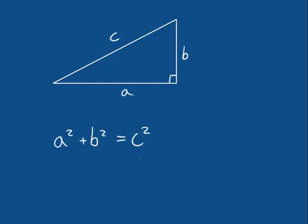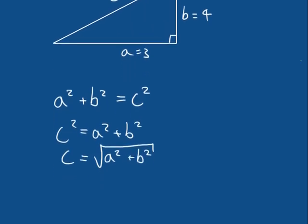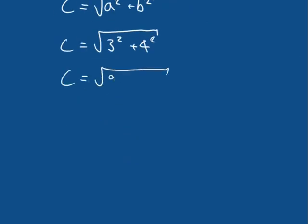So let's take a look at how we can apply this theory to calculate the length of an unknown edge in a right-angled triangle. Let's suppose that A equals 3 and B equals 4. How do we calculate the length of C? We know that A squared plus B squared is equal to C squared. Therefore, C squared is equal to A squared plus B squared, and C is equal to the square root of A squared plus B squared. So C is equal to the square root of 3 squared plus 4 squared, which means C is equal to the square root of 9 plus 16, which gives us the square root of 25.